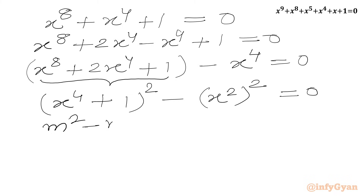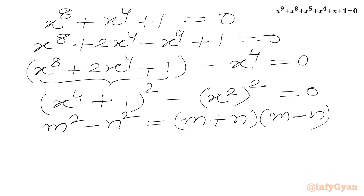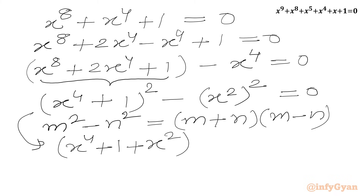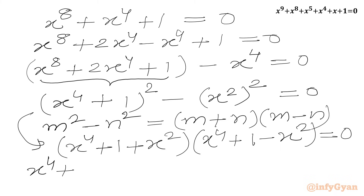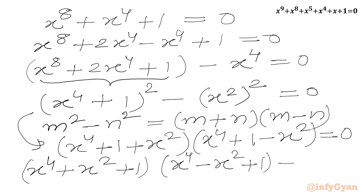Now we can use the difference of two squares identity: m squared minus n squared equals (m plus n)(m minus n). Applying this, we write (x power 4 plus 1 plus x squared) times (x power 4 plus 1 minus x squared) equal to 0. Or equivalently, (x power 4 plus x squared plus 1) times (x power 4 minus x squared plus 1) equal to 0.